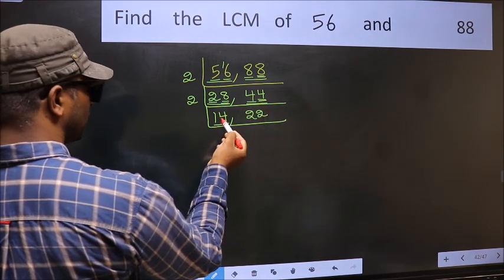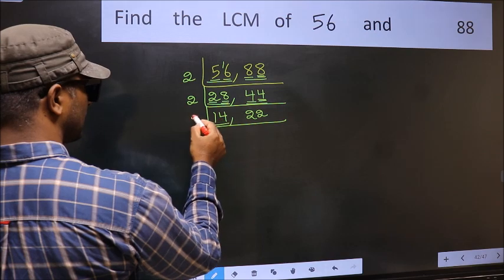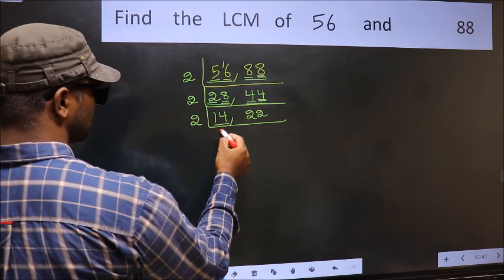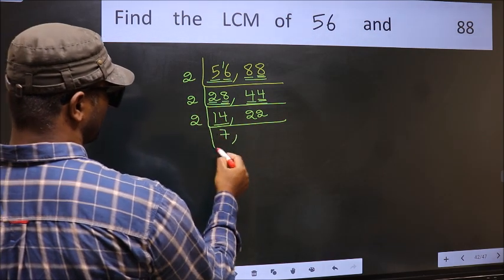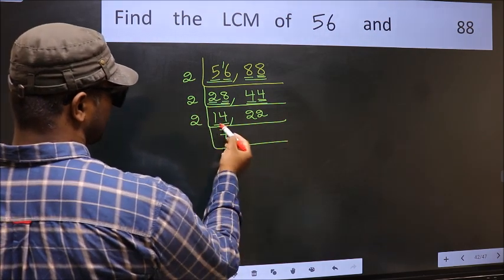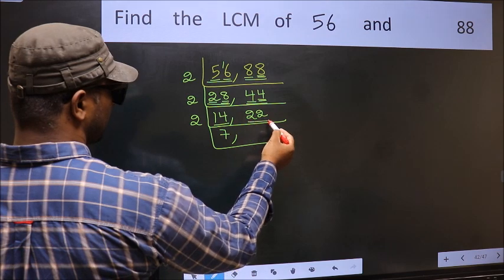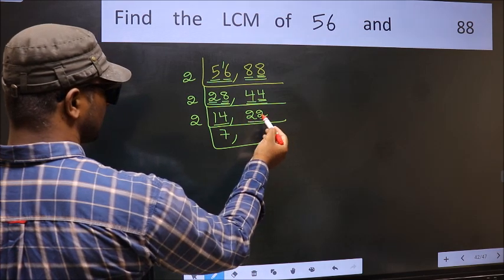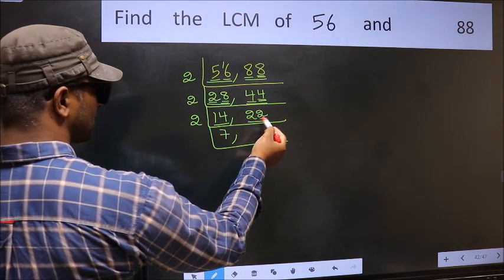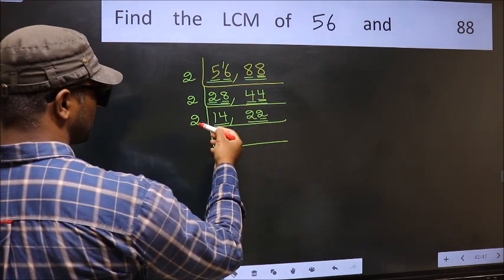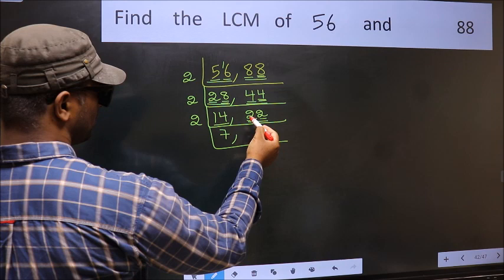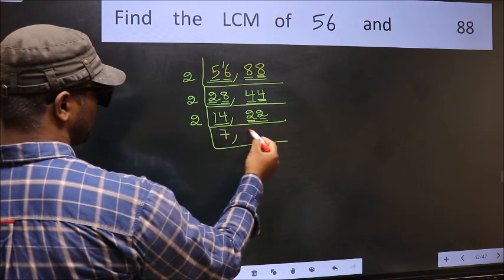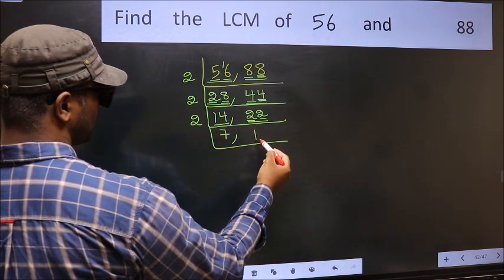Now here we have 14. 2 times 7 is 14. The other number is 22. Last digit is 2 — E1 — so this is divisible by 2. First number is 2; when do we get 2 in the 2 table? 2 times 1 is 2.